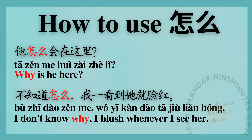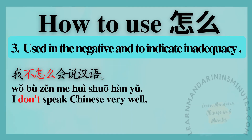不知道怎么? 我一看到他就脸红。 — I don't know why I blush whenever I see her. Number three: used in the negative and to indicate inadequacy.